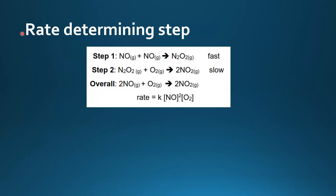Here we have another example. We have the overall equation, and we have step 1 and step 2. But this time, step 1 is fast and step 2 is the slow step — the rate determining step.